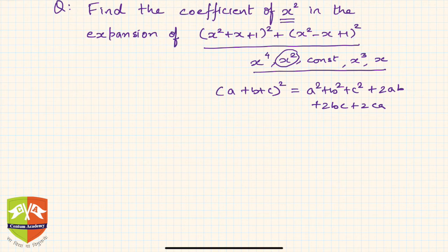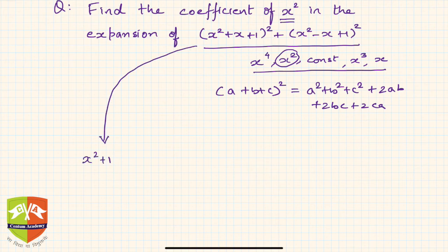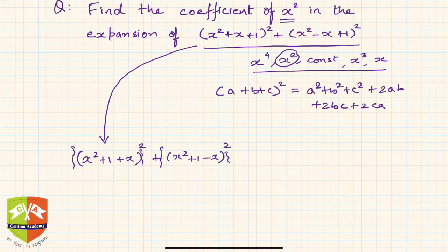What we can do is some clever clubbing. The expression can be written as (x²+1+x)² plus (x²+1-x)². We have just rearranged the two terms. Notice the first two components, x²+1, are the same in both squared terms.